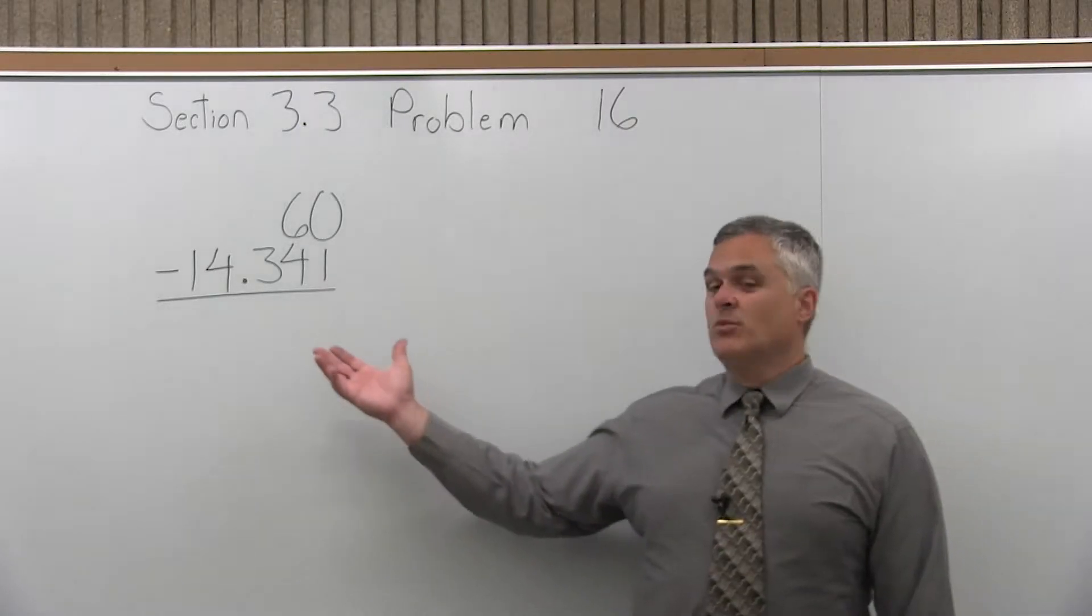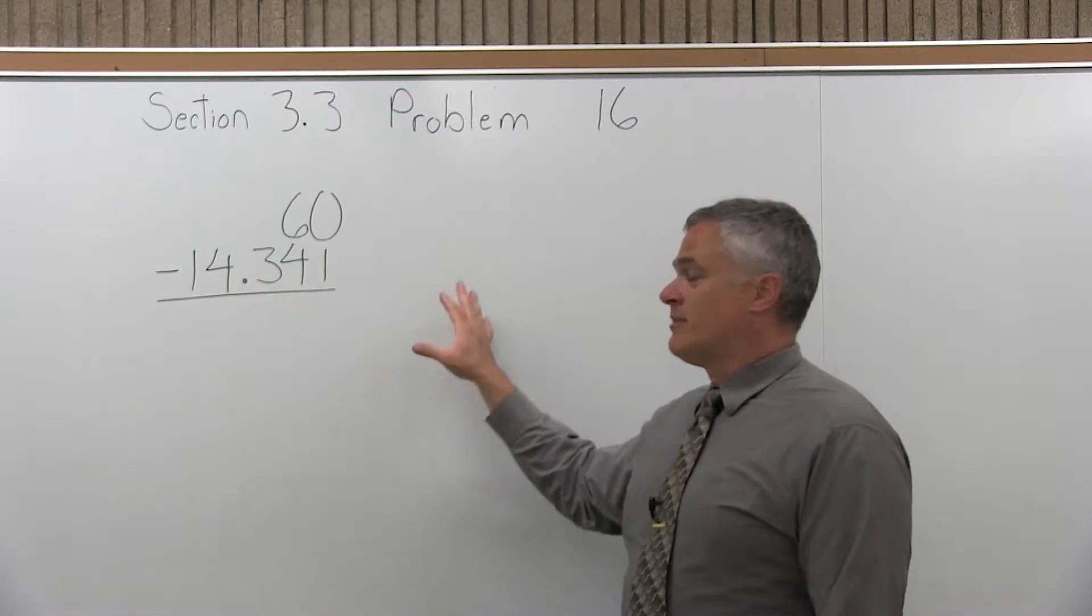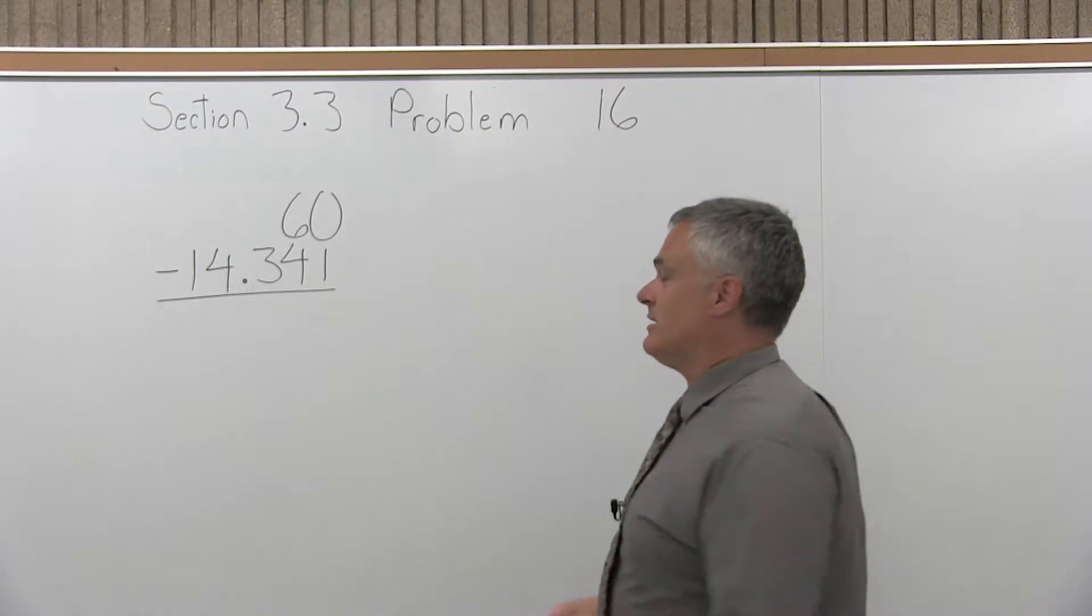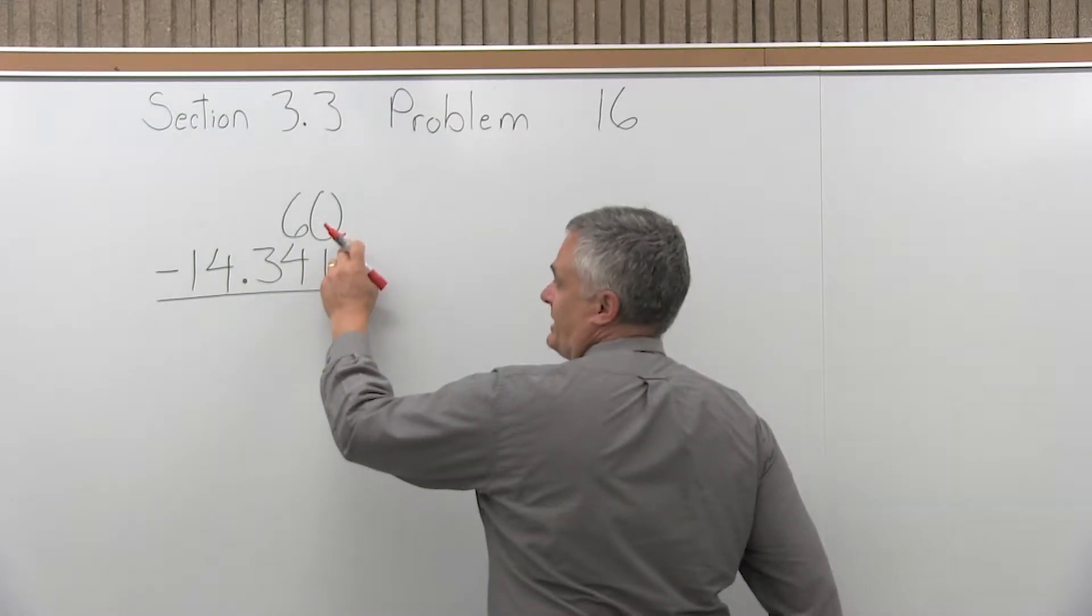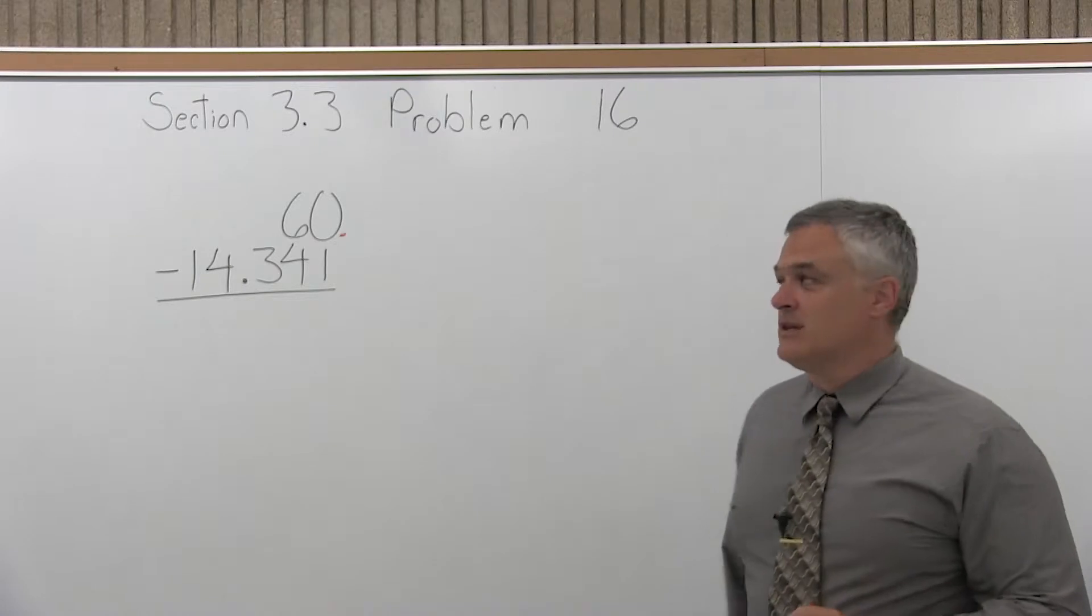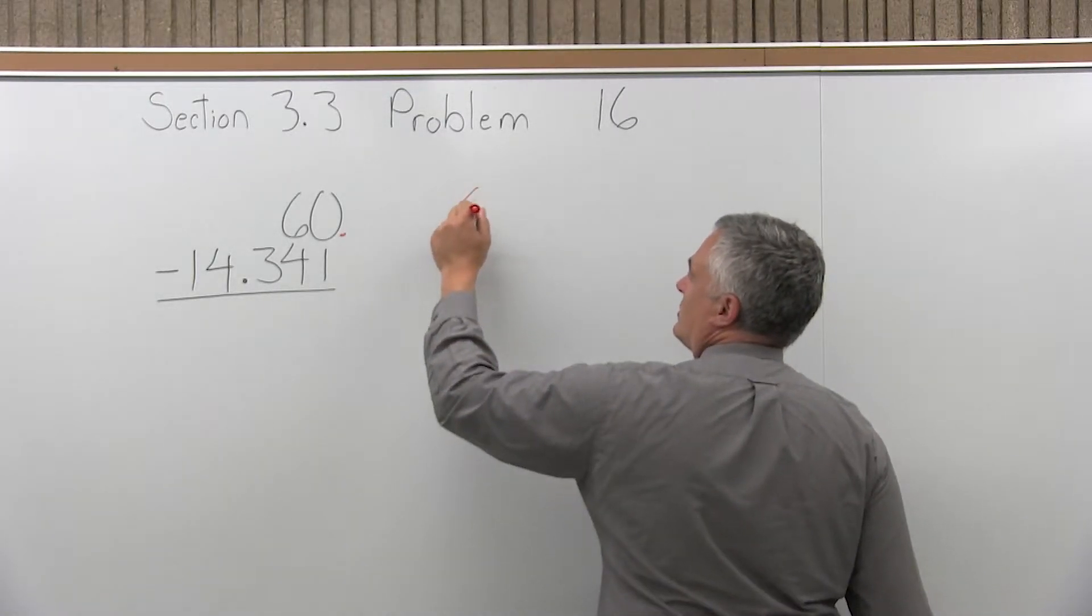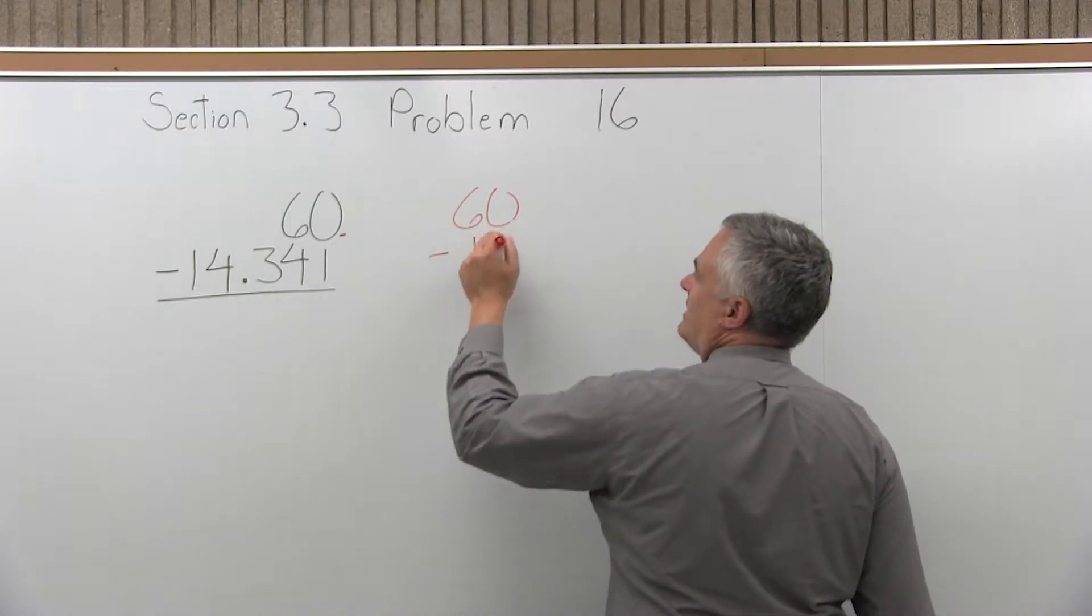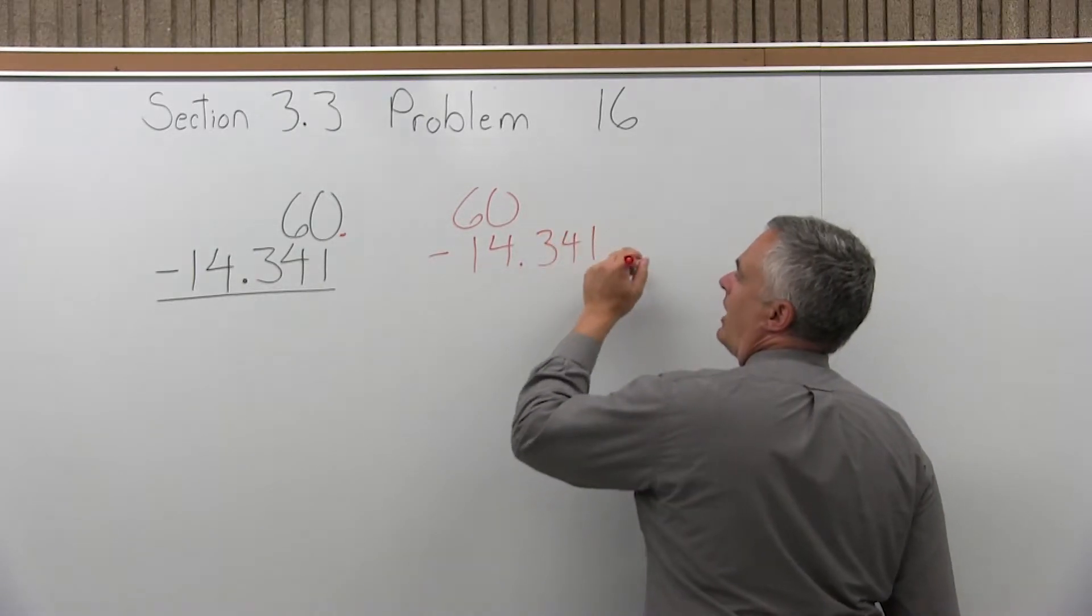Now, the problem with this is it's not really lined up. If you're going to use a calculator, it doesn't matter how you line it up, but by hand the decimals have to line up. The 60 doesn't have a decimal written, but it's assumed to be at the end of the 60. So one decimal is over here, and the other decimal is not directly beneath it. So what we want to do is rewrite this so that it's 60 minus 14.341, like that.